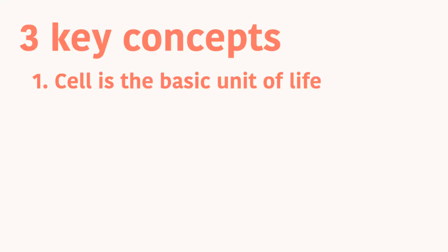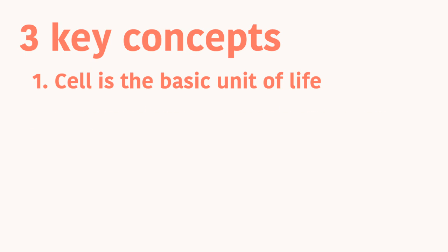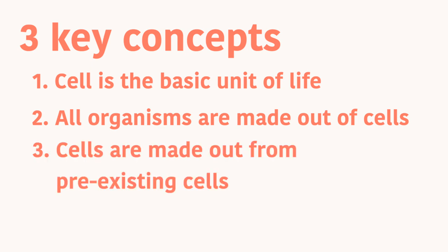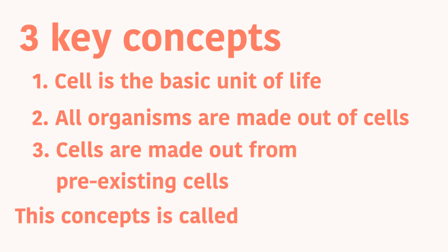There are three concepts we need to know about cells. First, cells are the basic unit of life. Second, all organisms are made out of cells. Third, all cells are made up from pre-existing cells. These concepts are known as the Cell Theory.